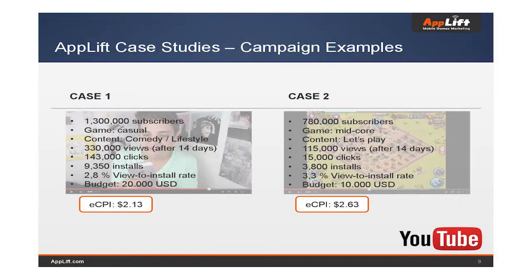Here are two cases we at AppLift have done. The first was with a casual game — we did one video on a YouTube channel and generated almost 9,500 installs with a quite good eCPI, slightly above $2.00. In the second case, we created a series of videos on a smaller YouTube influencer channel and generated a good eCPI of $2.63. The game publishers came back because their LTV data showed this worked quite well for them.